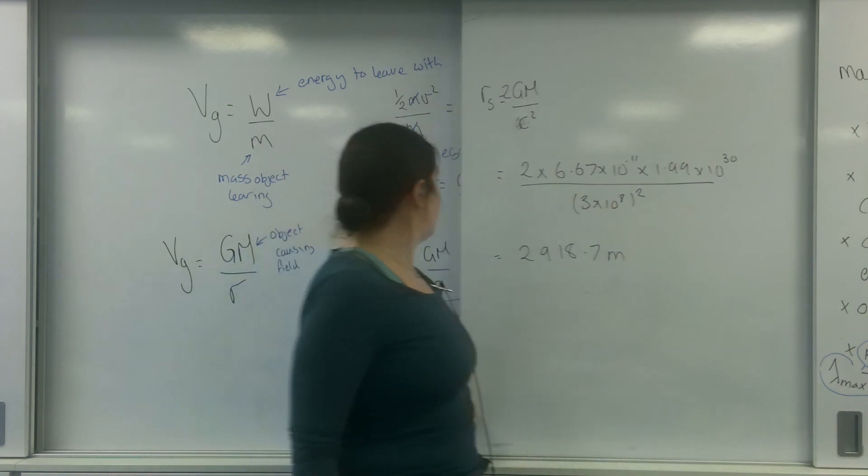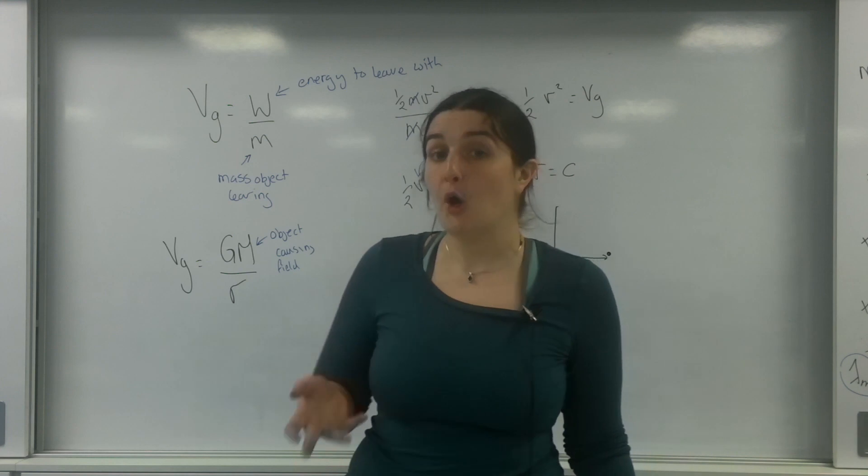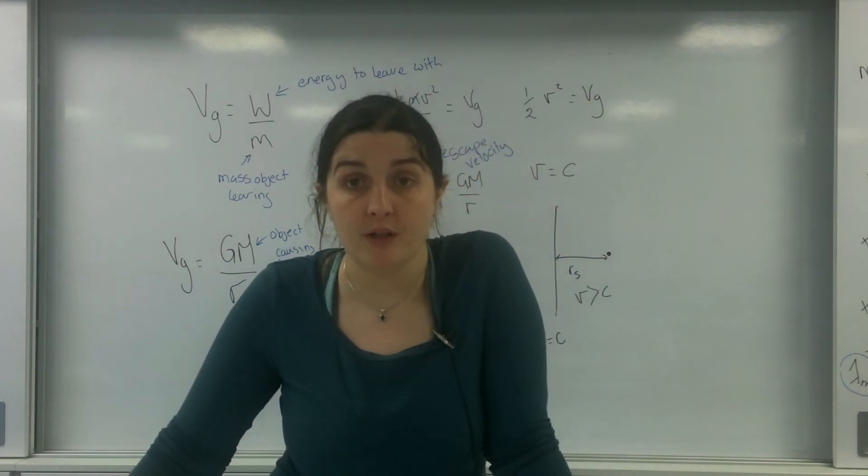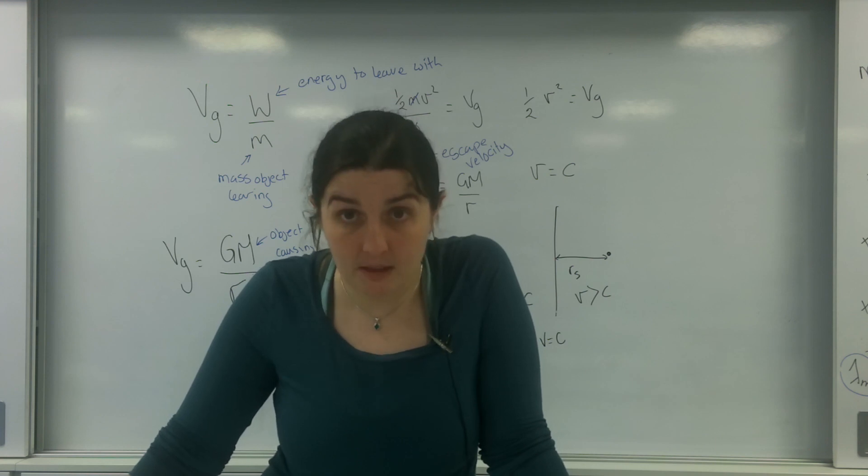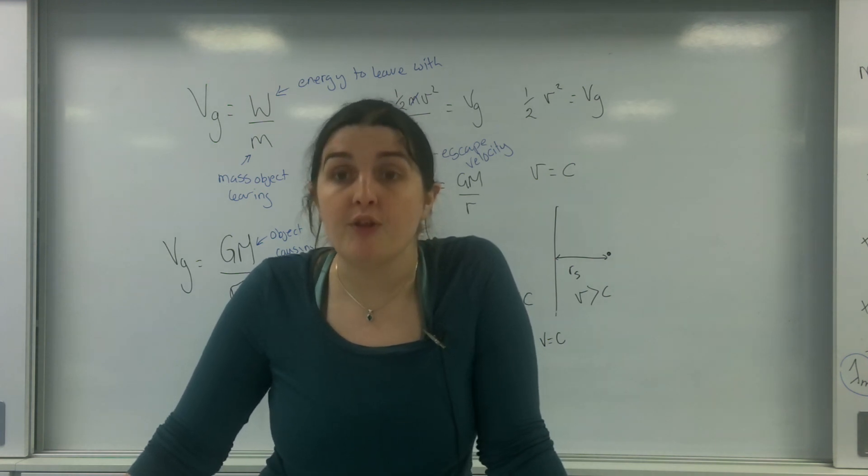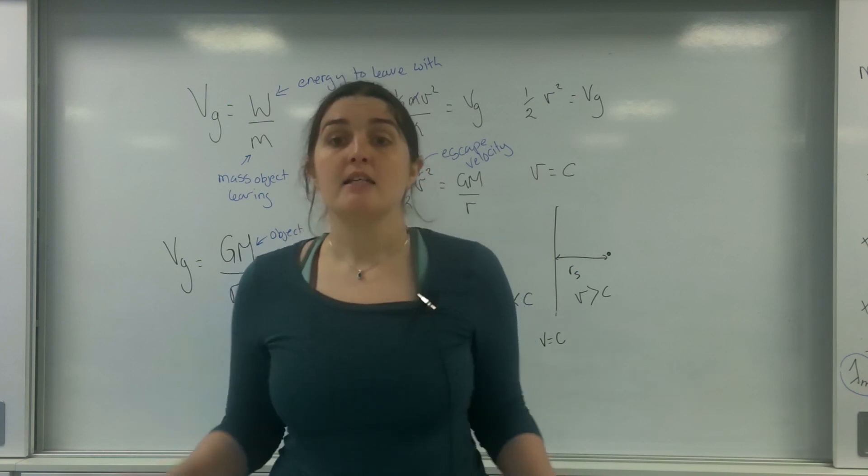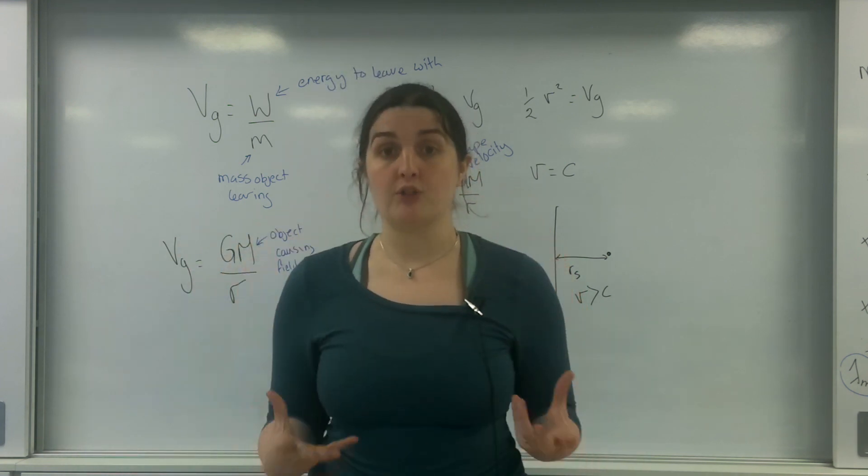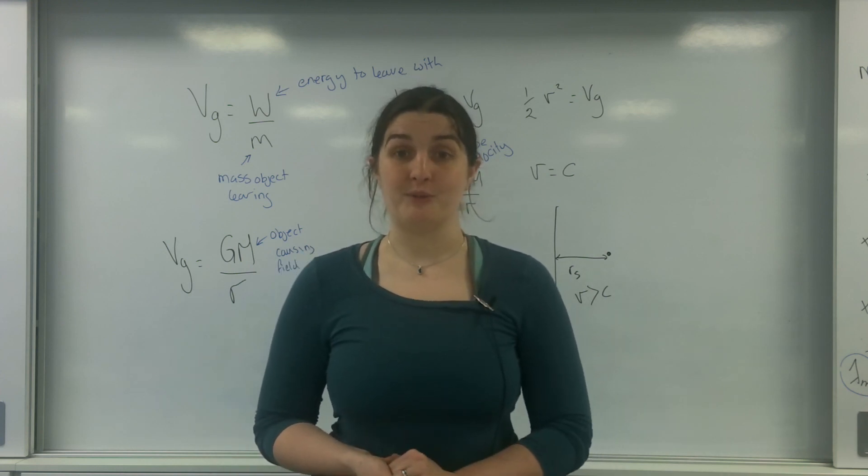Thus, not only does the star have to be bigger than eight solar masses to even go to a red supergiant and supernova, the core itself has to be bigger than three solar masses to even think about becoming a black hole. So that there is the Schwarzschild radius, and a very good recap on gravitational fields.